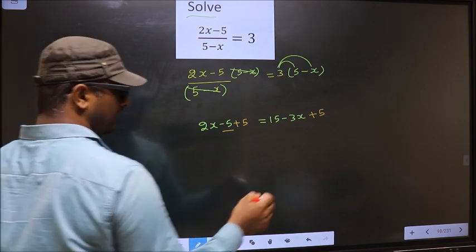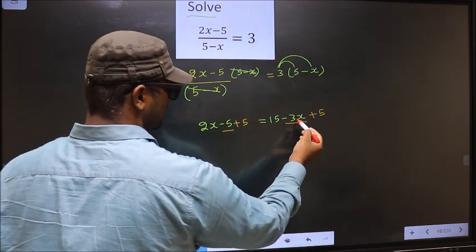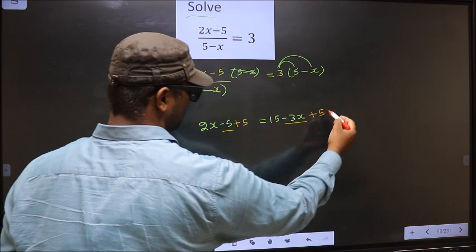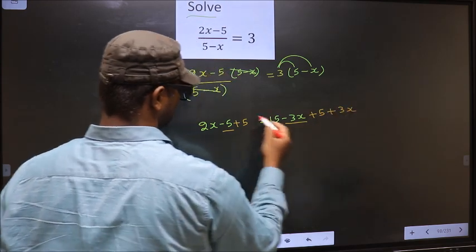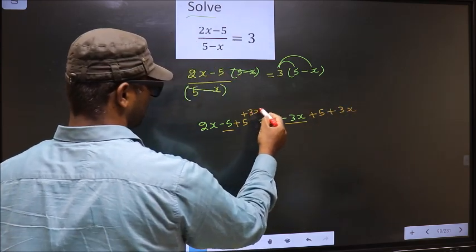In the same way, minus 3x should not stay on this side. So to remove minus 3x, you add 3x on both sides.